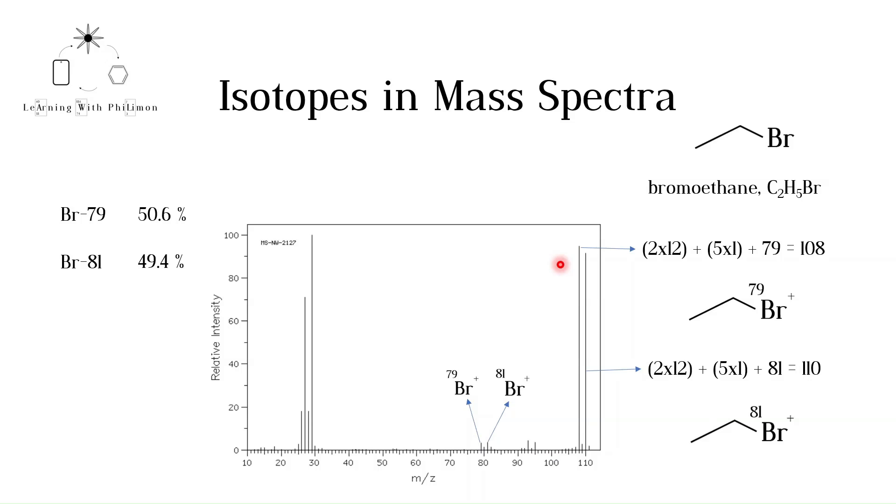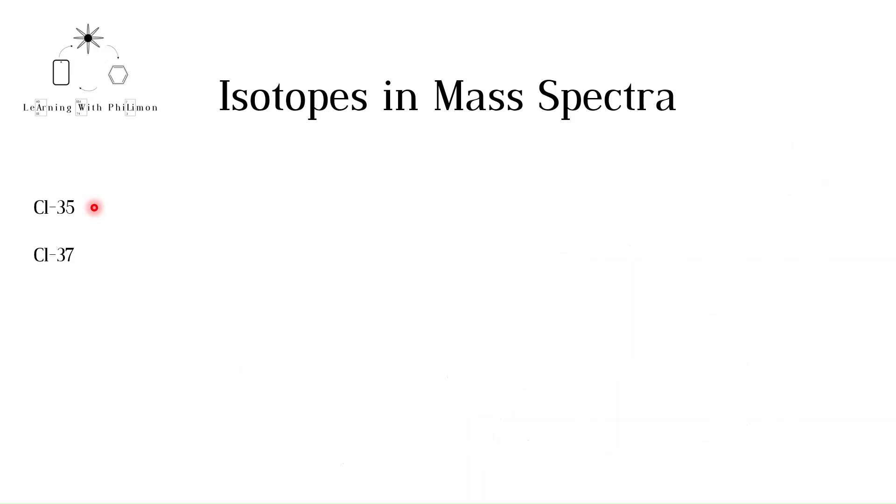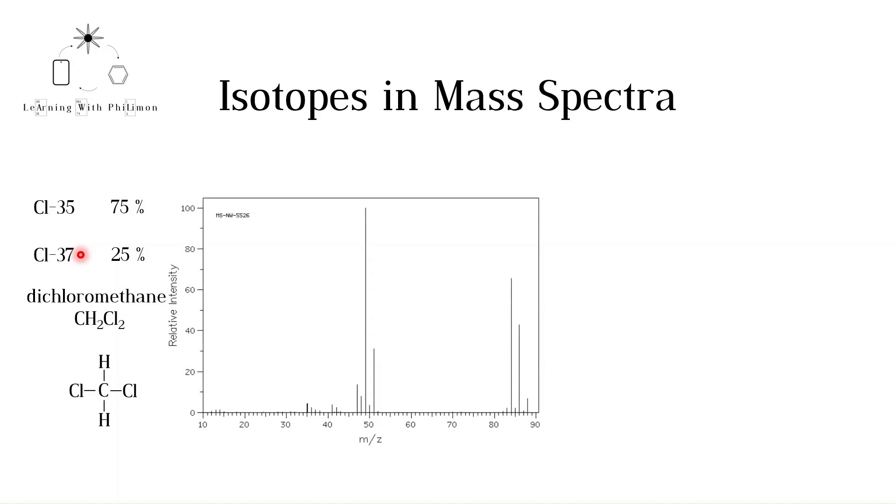Now let's take a look at a more complex example. Chlorine has two stable isotopes, Cl35 and Cl37. Their abundances are roughly 75 and 25%. Let's take a look at a compound that contains two chlorine atoms. Dichloromethane has a molecular formula of CH2Cl2.